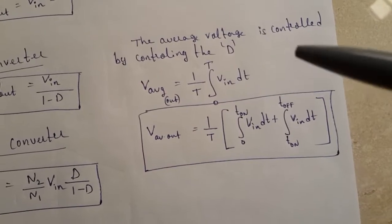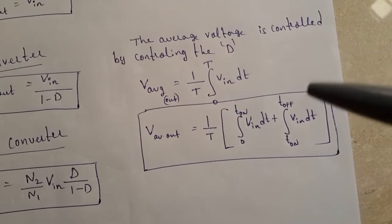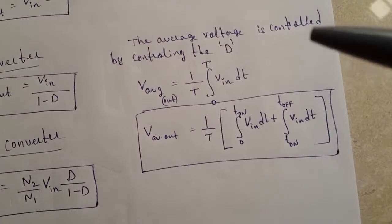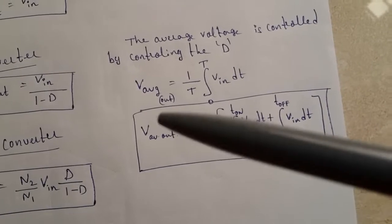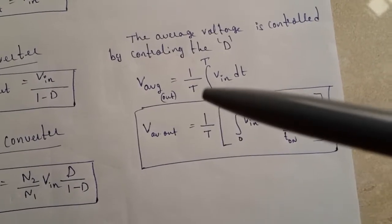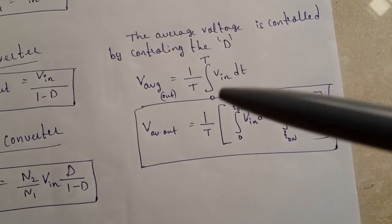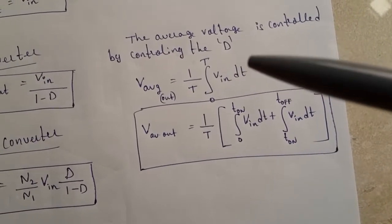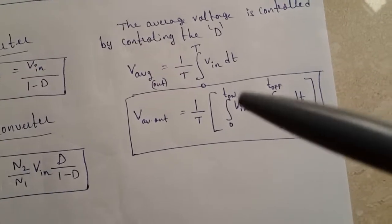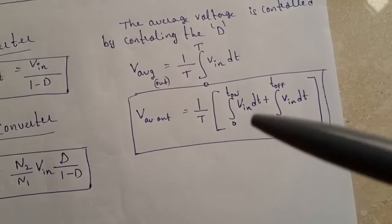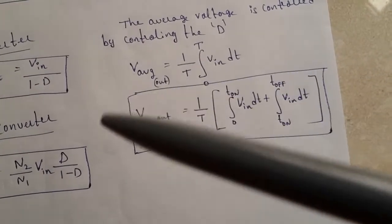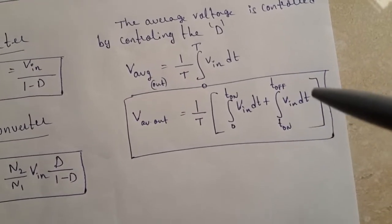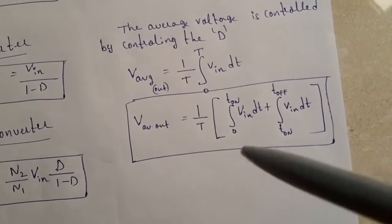The average output voltage is controlled by controlling the duty ratio. The average output voltage equals (1/T) times the integral from 0 to T of V_in dt. By controlling the on-time, the output voltage can be controlled using this equation.